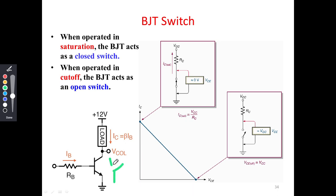The transistor is equivalent to an open switch. When it is in the off switch position, there is no current that can flow through this switch, and hence the open circuit BJT will provide a voltage at the collector — this point Vc — which is nearly equal to whatever Vcc we have provided.